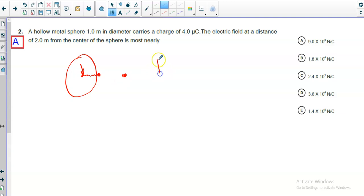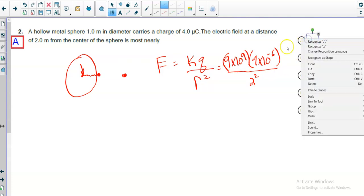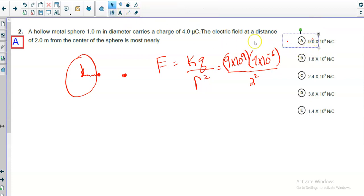The field strength, even though there is no field strength here, these two points that are outside the shell will act as if all the charge is located at the center. So we're going to use Coulomb's law. The electric field is KQ on the sphere divided by your distance away squared. That's nine times ten to the ninth times four times ten to the negative sixth coulombs divided by two squared, or four.